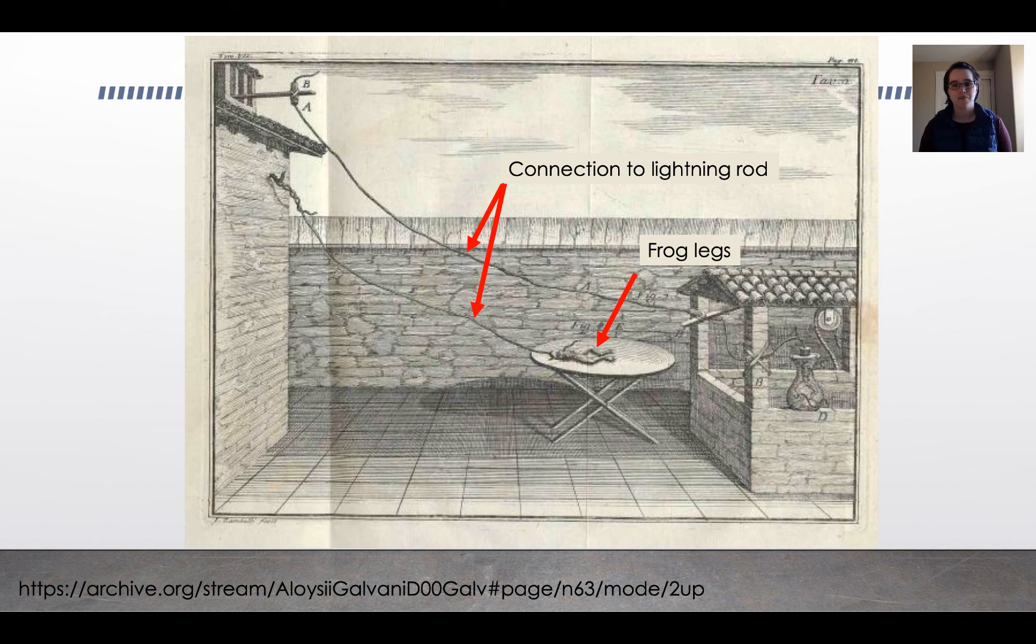Since Galvani's time, Galvani drew a lot of erroneous conclusions from his experiments about where the electricity came from. But since his time, that discovery has sparked quite a bit of understanding in terms of how our muscles contract.